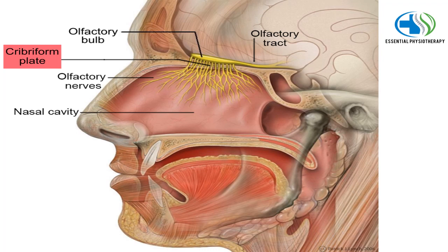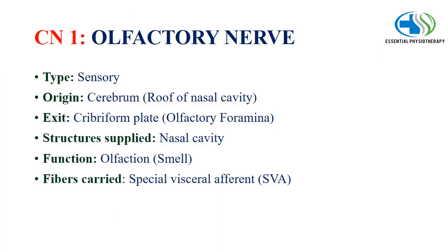The first cranial nerve is the olfactory nerve. It is a sensory type nerve which has its origin from the cerebrum and it exits through the cribriform plate. The structure supplied is the nasal cavity and the function is olfaction or smell. The fibers carried are special visceral afferent fibers.